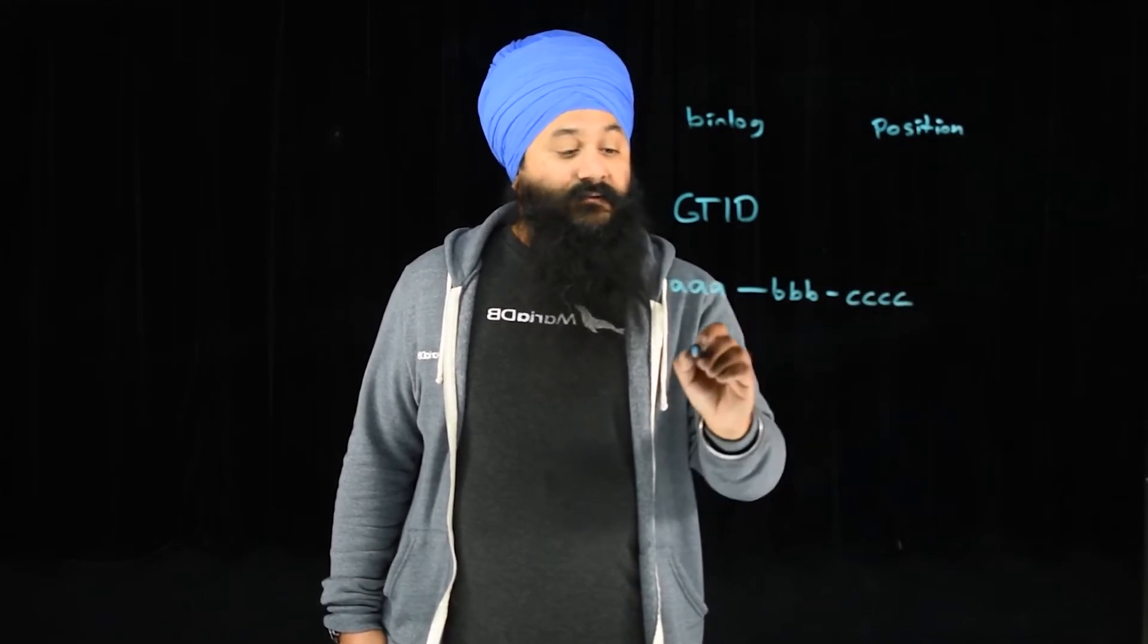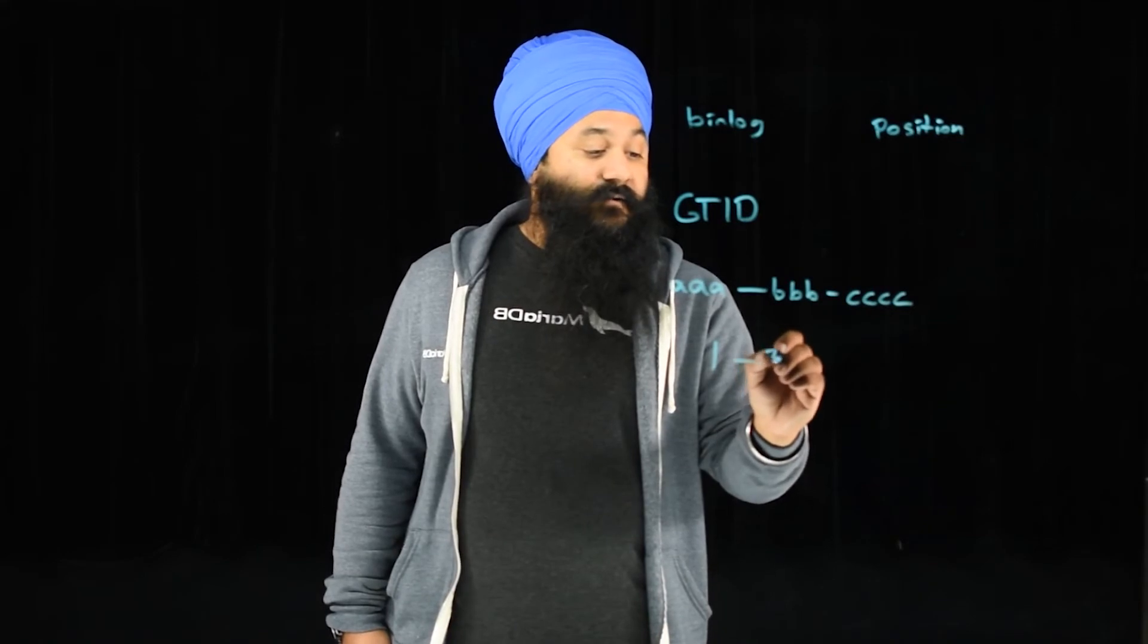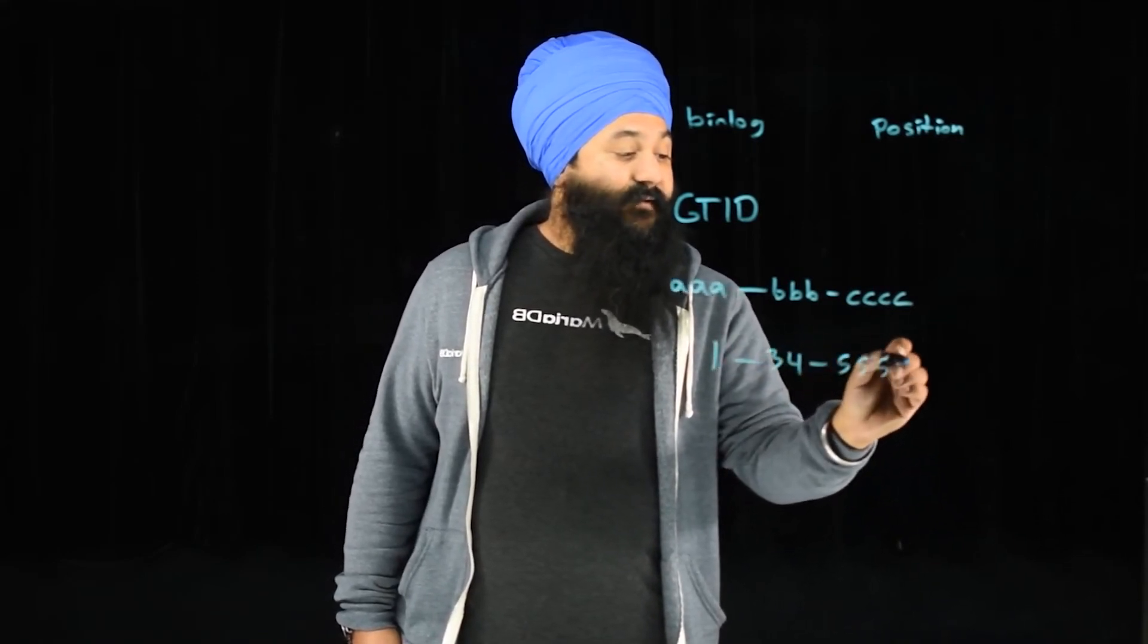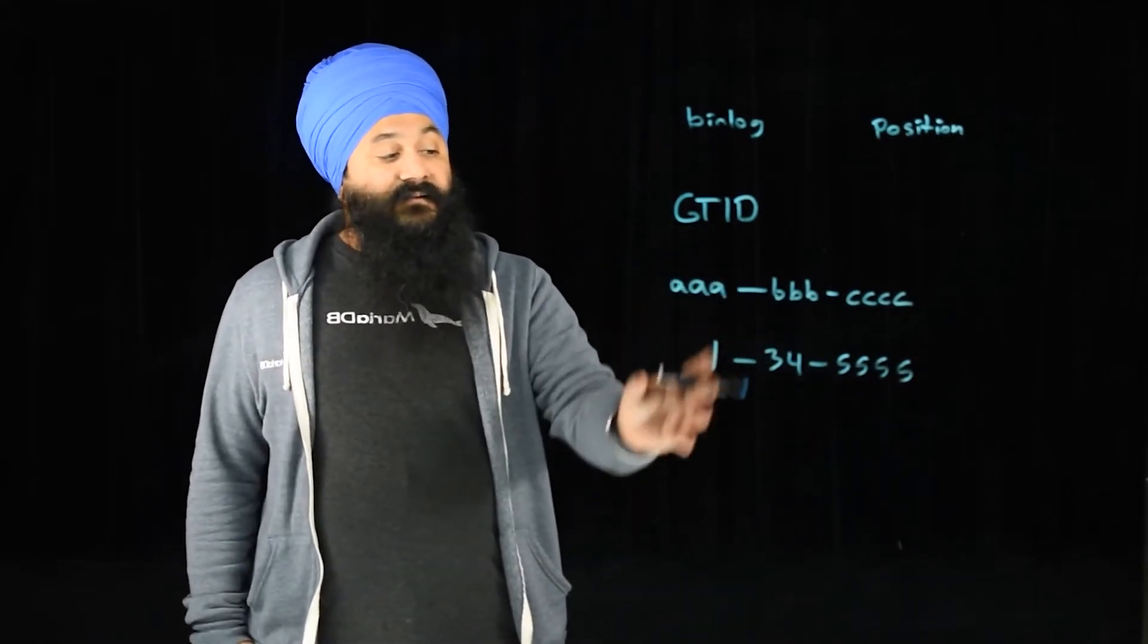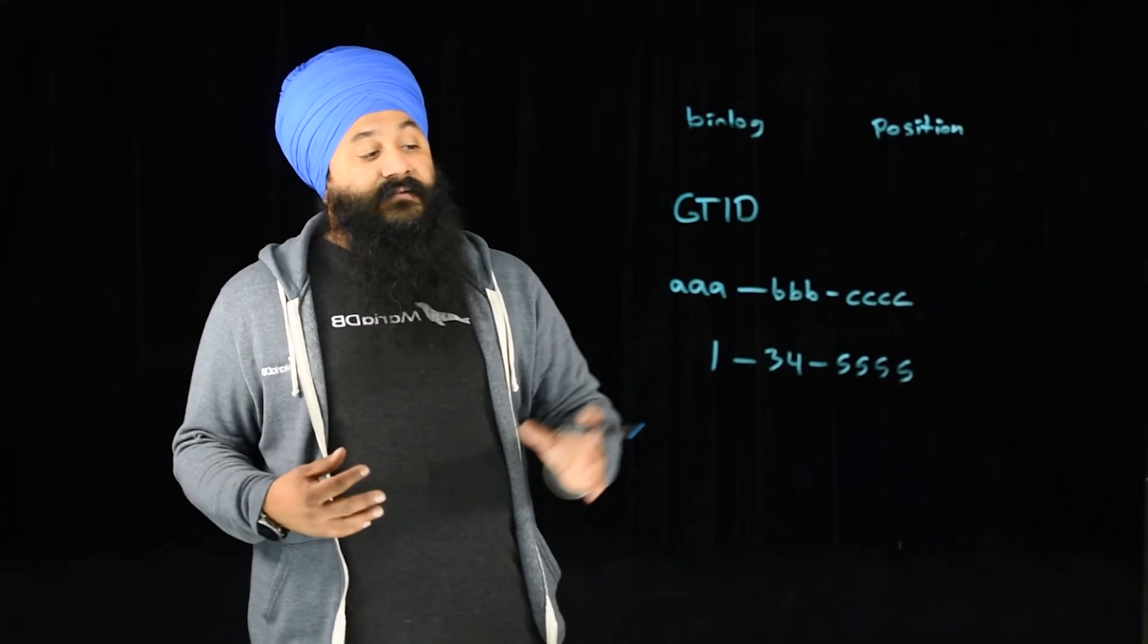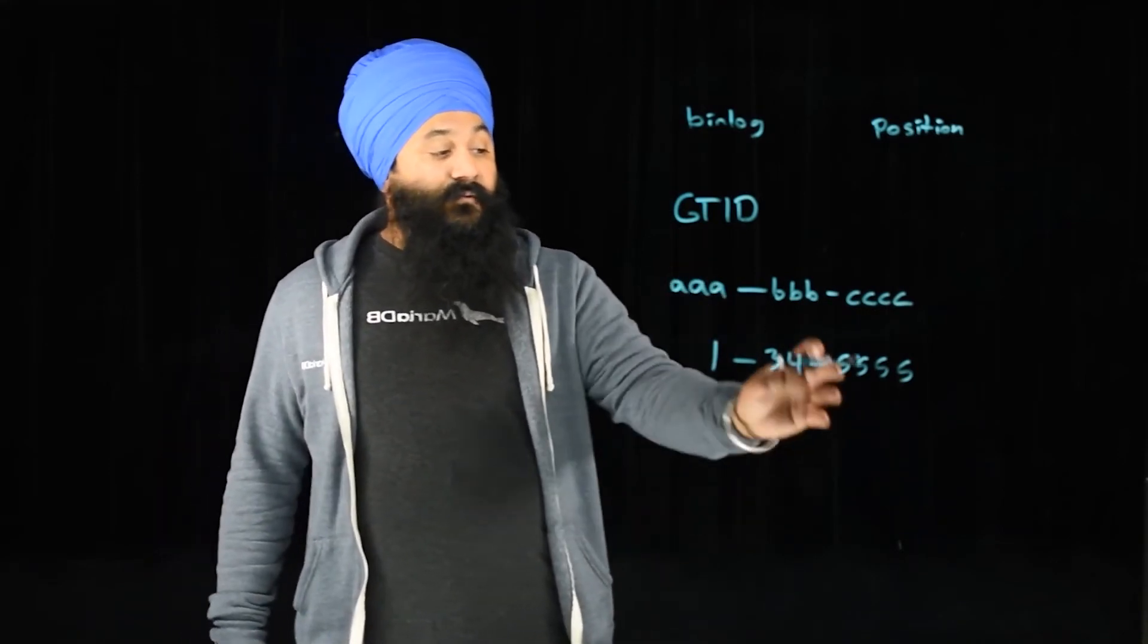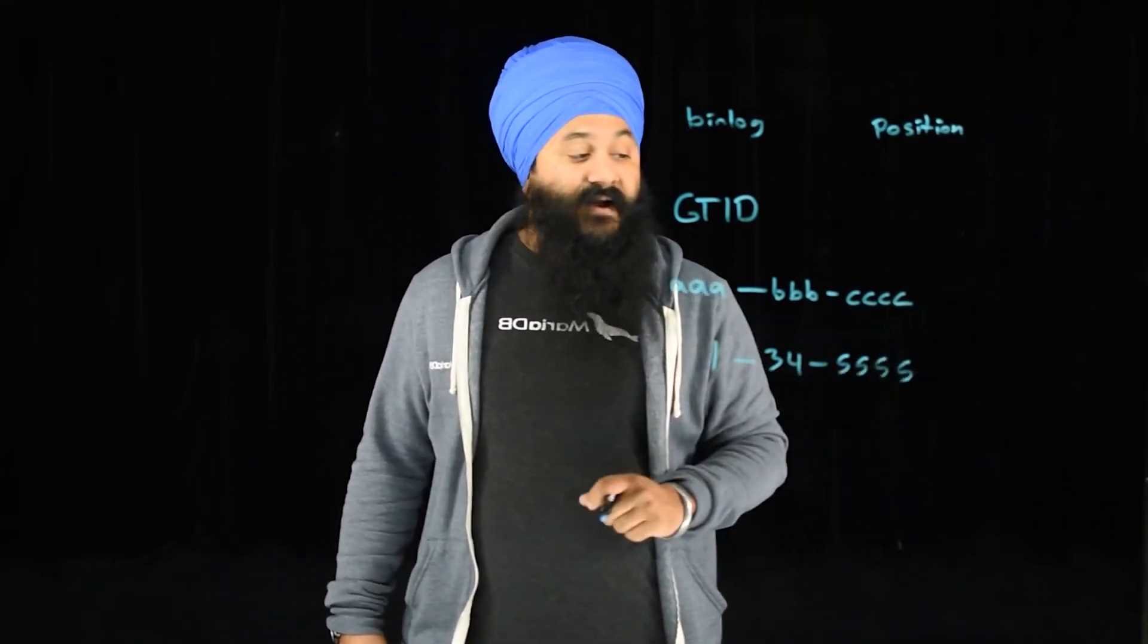You might see a GTID that looks like 1-34-5555. What this tells me is the domain is basically our data domain. This stream of data is labeled as number 1, it was written on server 34, and this is position 5555.